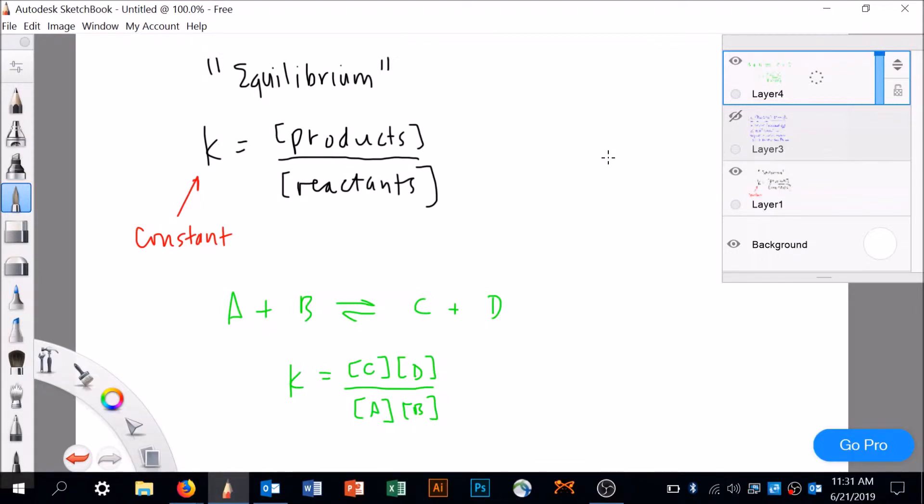Now obviously, if the temperature changes, then maybe it'll favor the products over the reactants. That's what this topic is all about. But it's important to appreciate what a constant means. It means that if the products go up, the reactants have to go up. If the products go down, the reactants have to go down because it's constant.